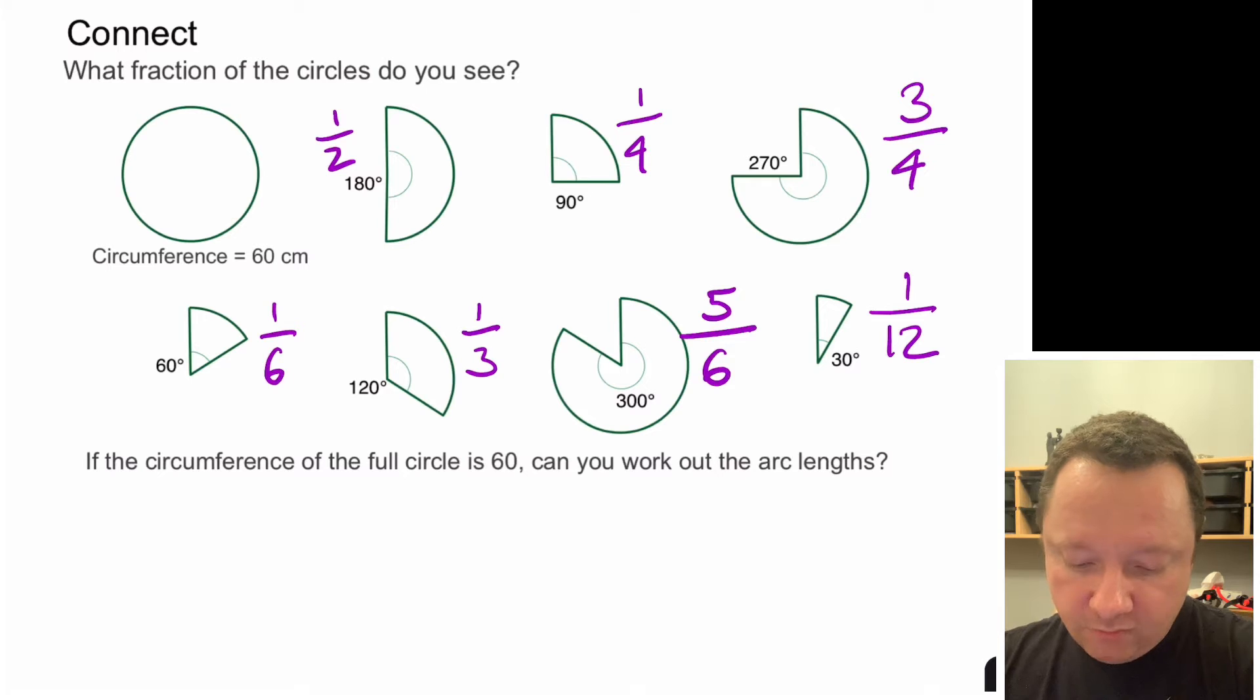Right so if the circumference of the full circle is 60 can you work out the arc length? You should now be able to do that from the fractions that we've just worked out by doing a fraction of 60. If you want to give that a go give it a go but we're going to move on to the next stage.